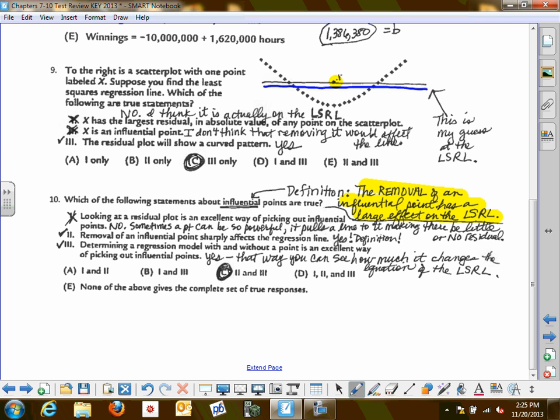So two is out. Therefore, three only is the only one true on that. Now, look here. Number ten is about this definition of influential points. Statement two here is straight up definition of influential point. Removing of this point sharply affects the regression line. That's straight up definition. And number three is also a good way to see if it affected the line. Compute the line with the point in and with the point out, and you can see if there's a big change in the equation of the line.